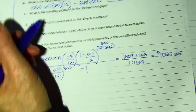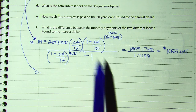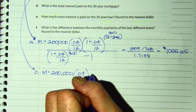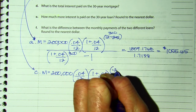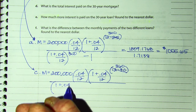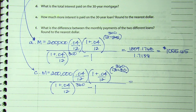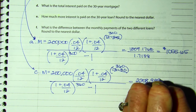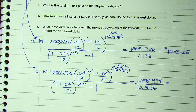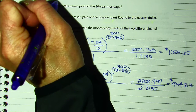So what is the monthly payment for the 30-year loan? The only part that's going to change in this entire formula is that instead of 12 times 25, I'm going to have 12 times 30 — same amount borrowed, same interest rate. So 12 times 30, which is 360. The bottom: 1 plus .04 divided by 12 to the 360 minus 1. When I entered the top I got 2208.999, and the bottom I got 2.3135. Their monthly payment is $954.83.